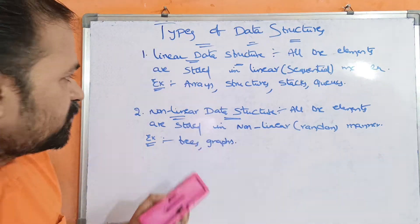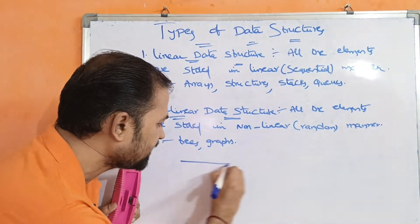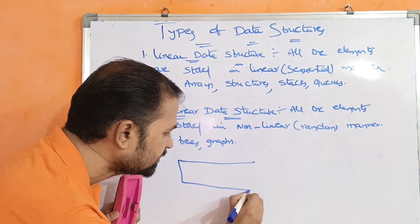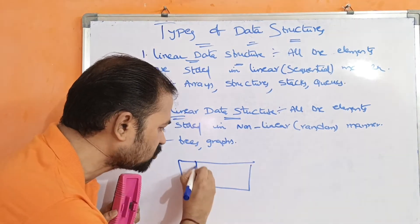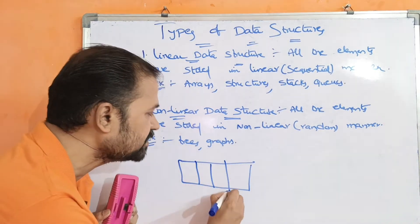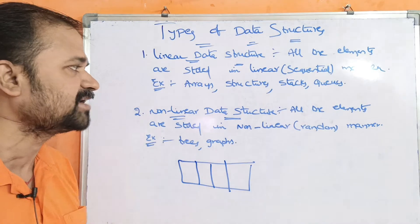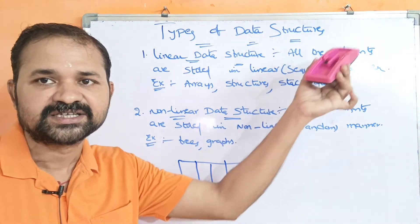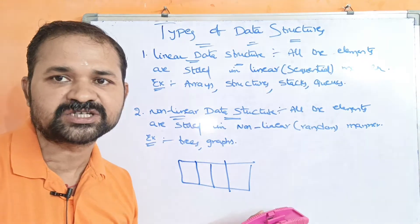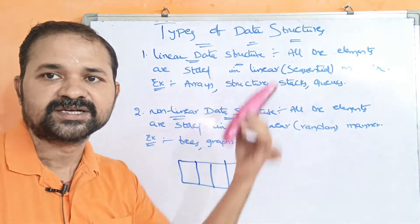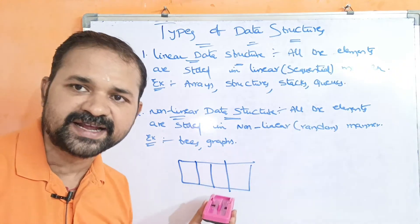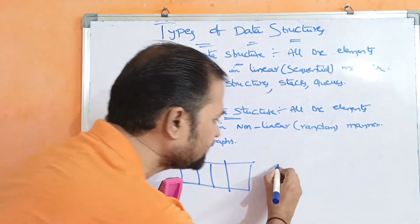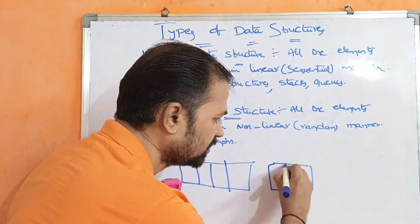The best examples are arrays. Arrays lo data sequential ga store lo, first element, second element, third element likewise. Structures lo go anthe store lo around to the day. Stacks lo go anthe store lo around to the day. Stacks ni queues ni manam using arrays implement chayechu, ne dhe ante linked list go anthe implement chayechu.